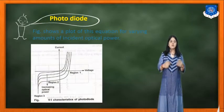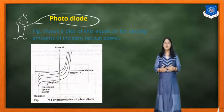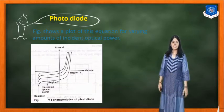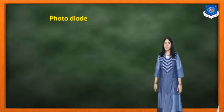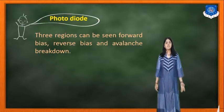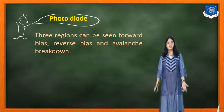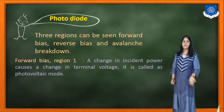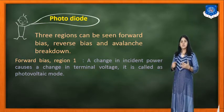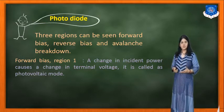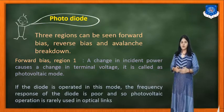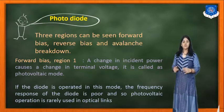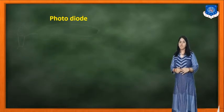The figure shows the plot of the diode equation for varying amounts of incident optical power, showing voltage and current characteristics for various values. Three regions can be seen in the characteristics: forward bias, reverse bias, and avalanche breakdown. In the forward bias region, a change in incident power causes a change in terminal voltage, known as photovoltaic mode. If the diode is operated in this mode, the frequency response is poor, so photovoltaic operation is rarely used in optical systems.